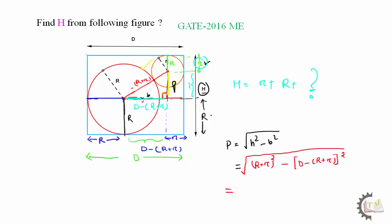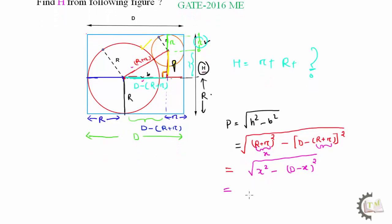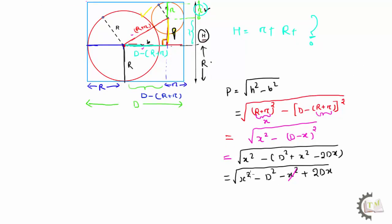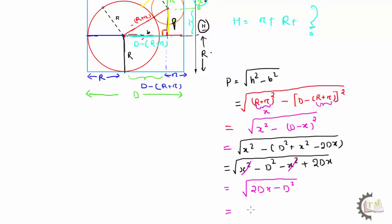Expanding (D minus X) squared gives D squared plus X squared minus 2DX. So P equals the square root of X squared minus (D squared plus X squared minus 2DX). Applying the distributive law: the X squared terms cancel, leaving P equals the square root of 2DX minus D squared. Substituting back X as R plus r, we get P equals the square root of 2D(R plus r) minus D squared.